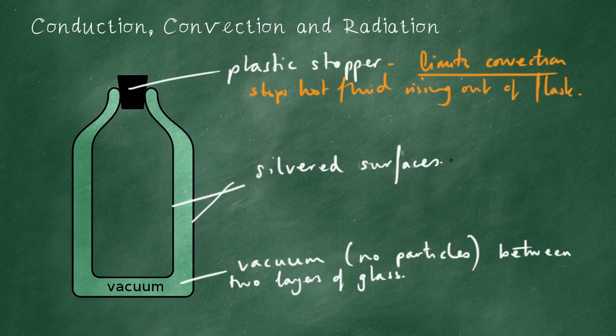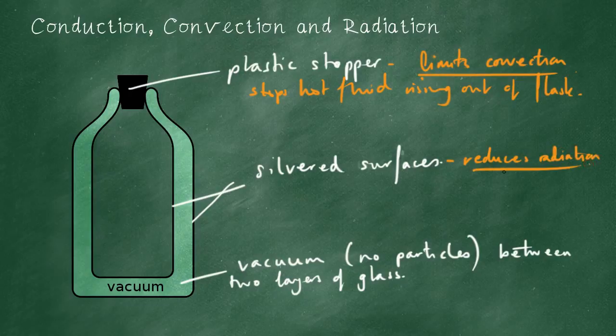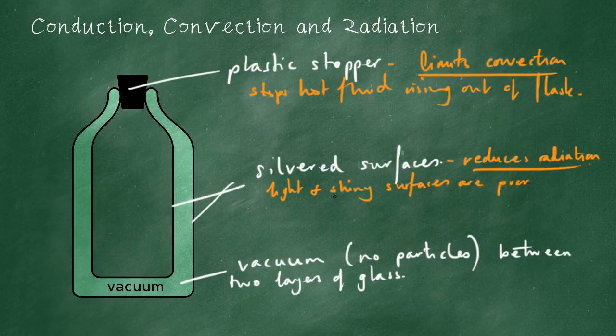The silvered surfaces - the last slide we talked about light and shiny surfaces are poor emitters of infrared. So this reduces radiation. Light and shiny surfaces are poor emitters of the infrared.